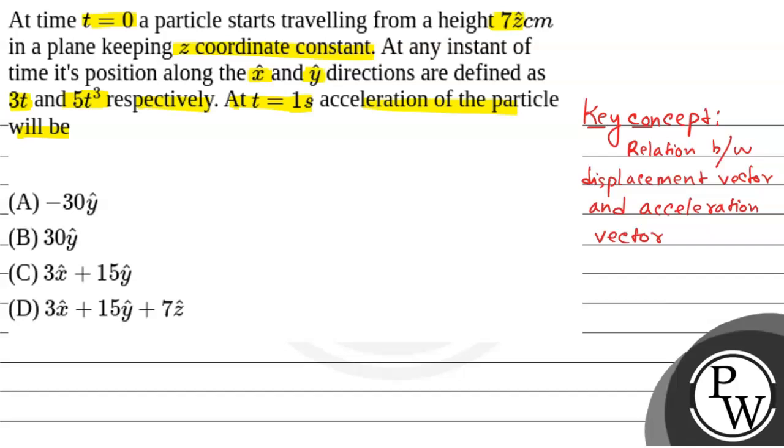Now, let us say that displacement vector is r⃗. If we differentiate displacement vector with respect to t, we get velocity. And if we differentiate velocity with respect to t, we get acceleration. That means, acceleration is equal to d²r⃗/dt². So this is the relation between displacement vector and acceleration vector.